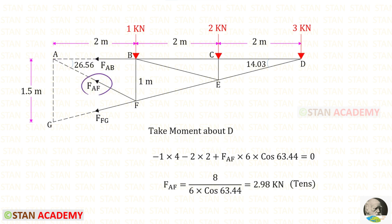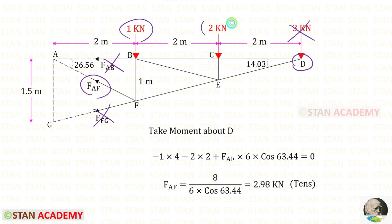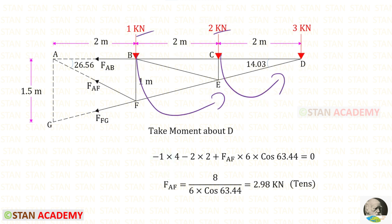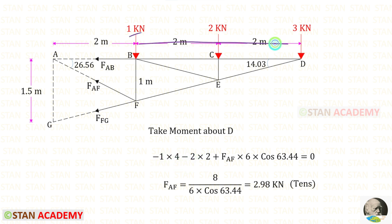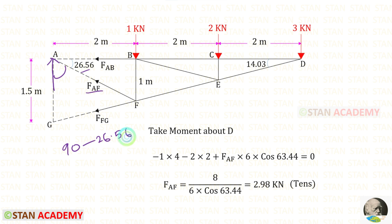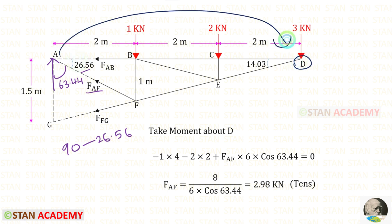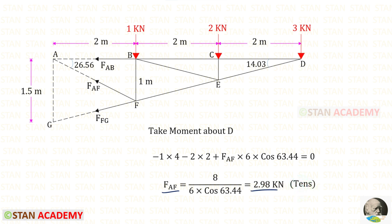To find FAF, we take moments about D. When we take moments about D, we do not consider the 3 kN force, FAB, or FFG. The remaining forces are FAF, 1 kN, and 2 kN. These two loads act in the anti-clockwise direction, so both are negative — with distances of 4 and 2 respectively. We resolve FAF vertically, needing the angle 90° minus 26.56°, which gives 63.44°. About point D, FAF acts clockwise so it is positive, with a distance of 6 multiplied by cos 63.44°. Solving gives a positive value for FAF, meaning it is tensile. Thank you so much.